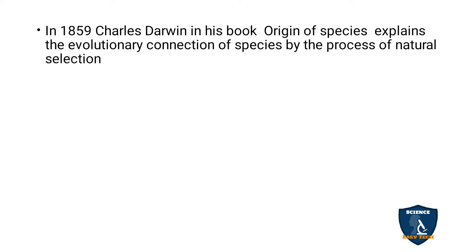Charles Darwin's Origin of Species explains evolution — how a single cell became multicellular, how fish became amphibians like frogs, frogs became snakes, snakes became birds, and birds became mammals. Based on natural selection, those which can survive do survive, and those which cannot are gone from the world. Darwin also used species as his experimental unit.